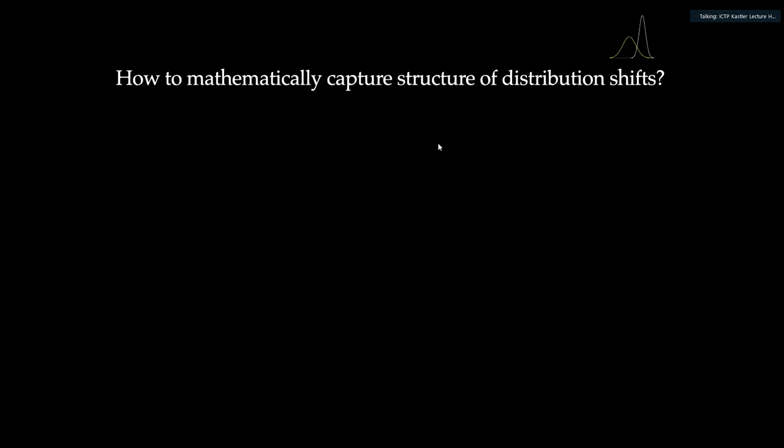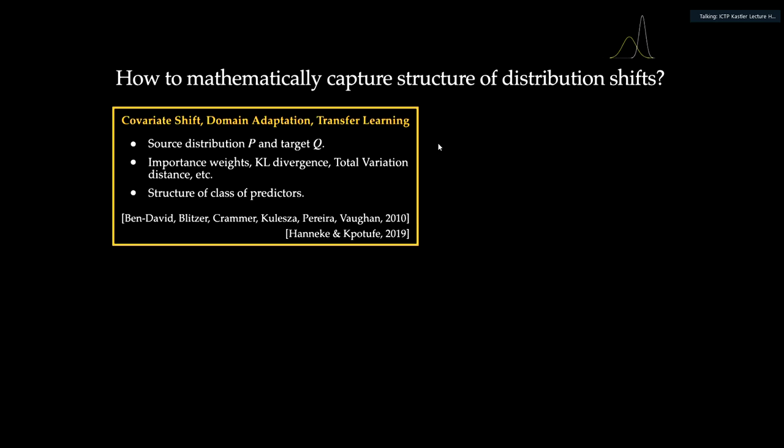When thinking about tackling distribution shifts, the main challenge is really how do we mathematically describe distribution shifts. If we want to derive machine learning guarantees for distribution shifts, we need to somehow describe the distributions that we care about. There is a large literature on the problem of covariate shift, domain adaptation, and transfer learning. Typically in this area, people start with a source distribution — where training examples come from — and then a target distribution, often different. People relate these two distributions in terms of divergence measures such as KL divergence or total variation distance, and give guarantees in terms of how much performance degrades on the target given the distance between them.